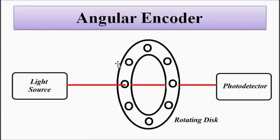Same is for angular encoder also. It consists of a rotating disc which allows transmission or blocking of light signal which is captured by the photodetector.